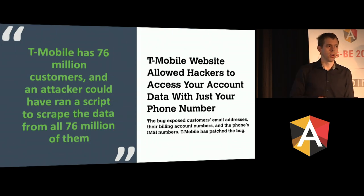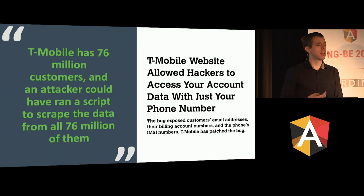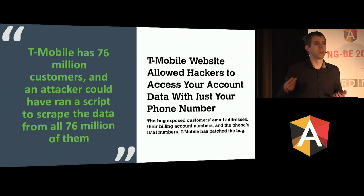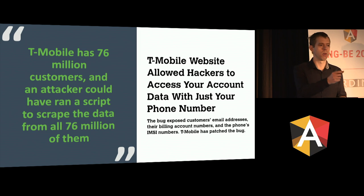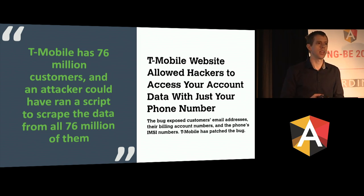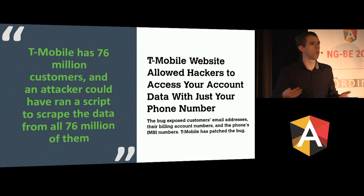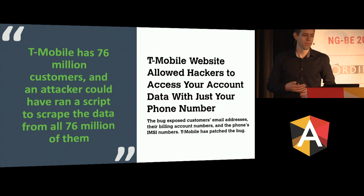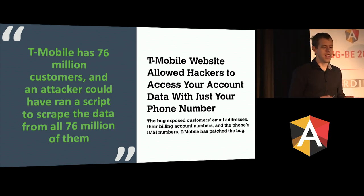T-Mobile had a problem where they potentially exposed data on 76 million customers. They use the phone number as an account identifier, and they did implement authentication checks — they checked if you were logged in. But they forgot the next step: checking if the authenticated user is actually the owner of the account they're trying to access. So if you took your authenticated cookie and sent the same API call with your friend's phone number via Postman, you'd get his account information. Telefonica had the same problem in Spain, and AT&T had the same problem in the US — this is quite common.